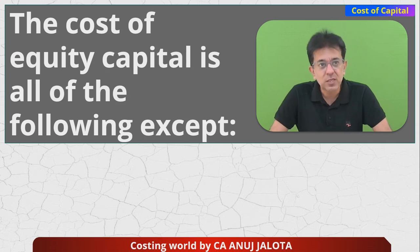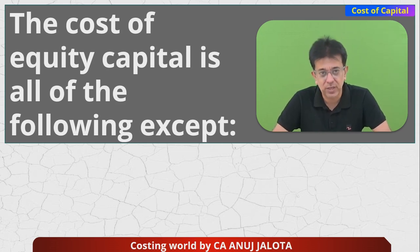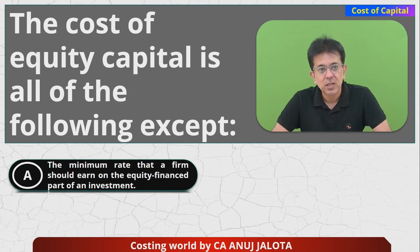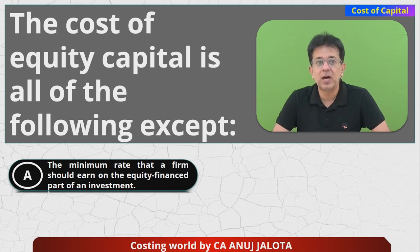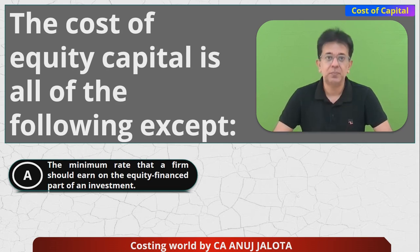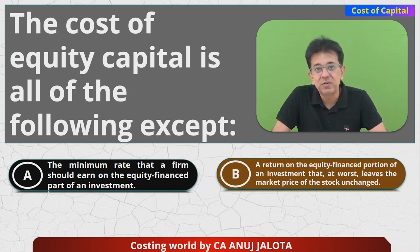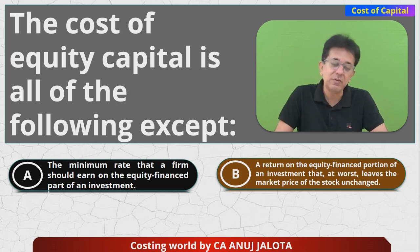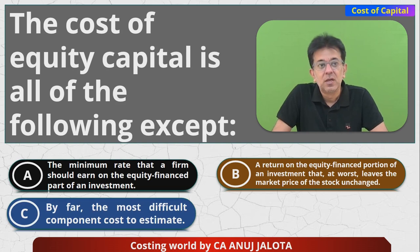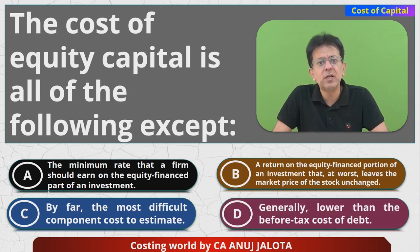The cost of equity capital is all of the following EXCEPT — here are the four options. A: the minimum rate that a firm should earn on the equity-financed part of an investment. B: a rate on the equity finance portion of the investment that at worst leaves the market price of the stock unchanged. C: by far the most difficult component cost to estimate. D: generally lower than the before-tax cost of debt.